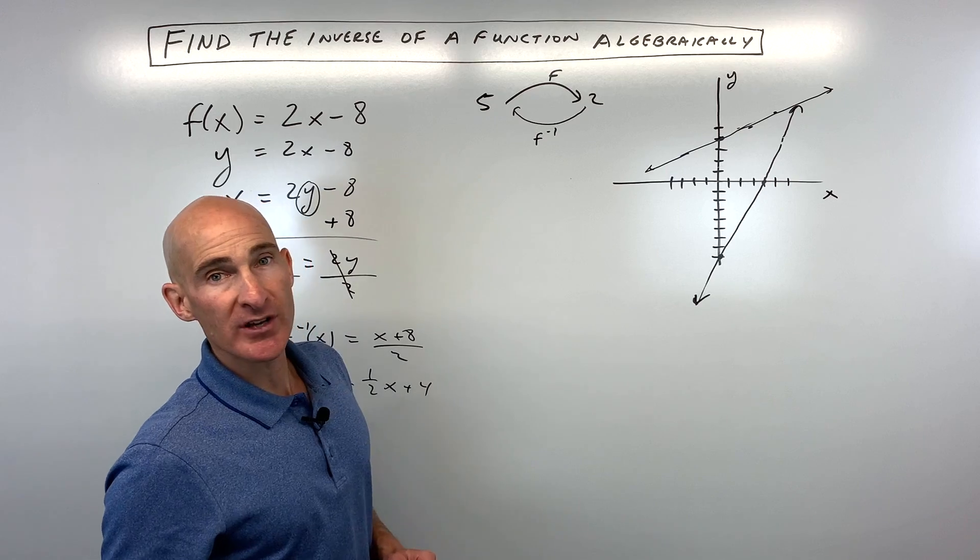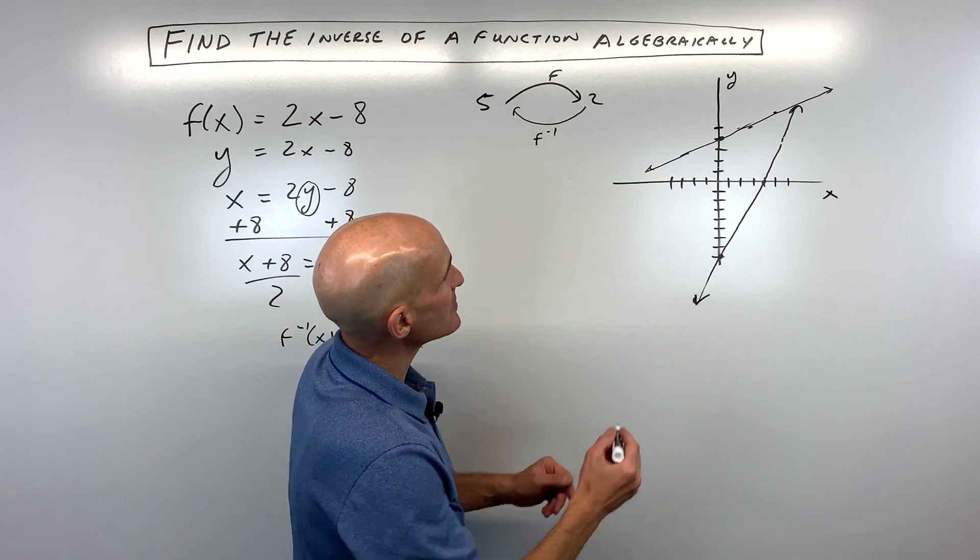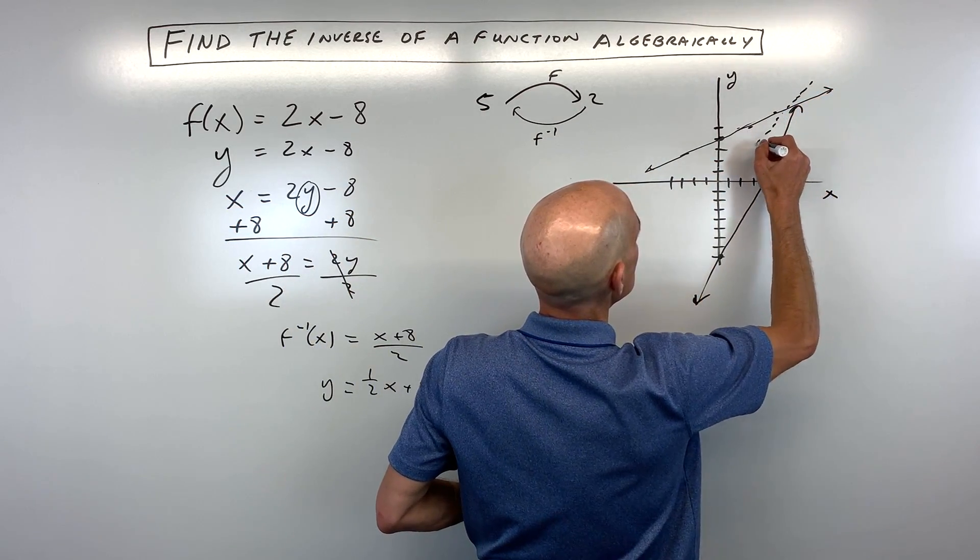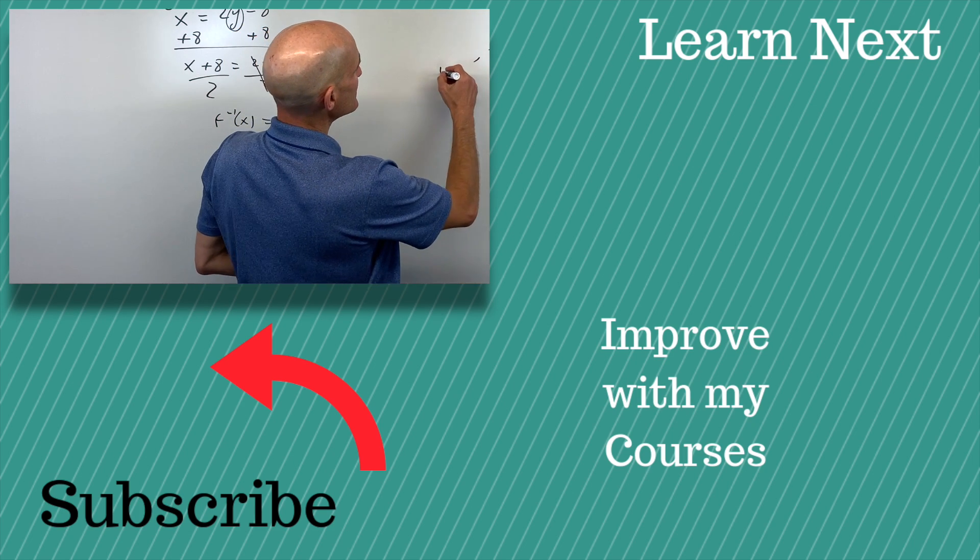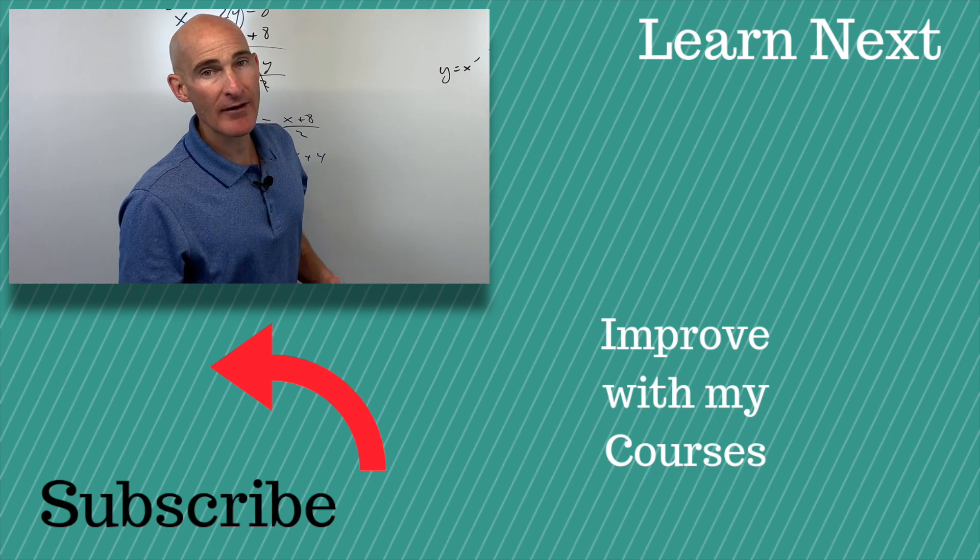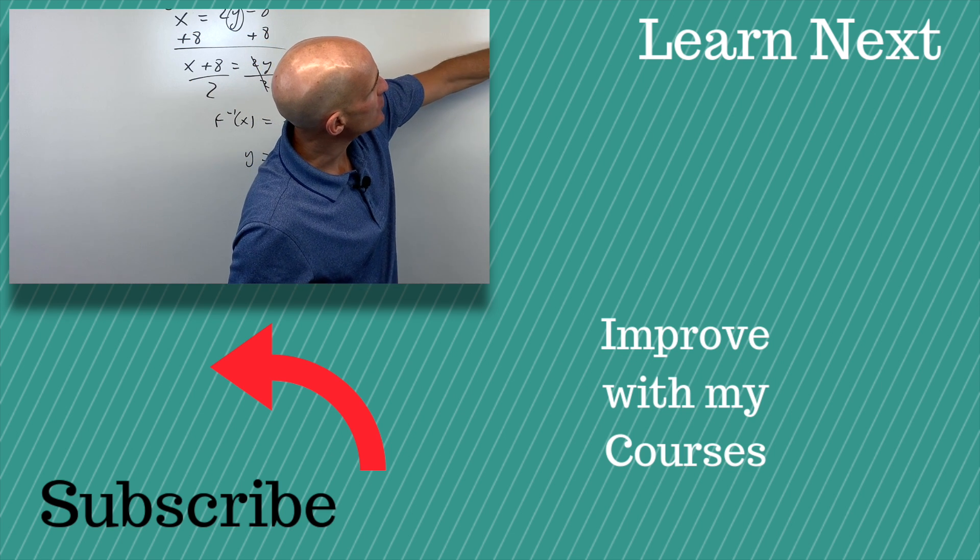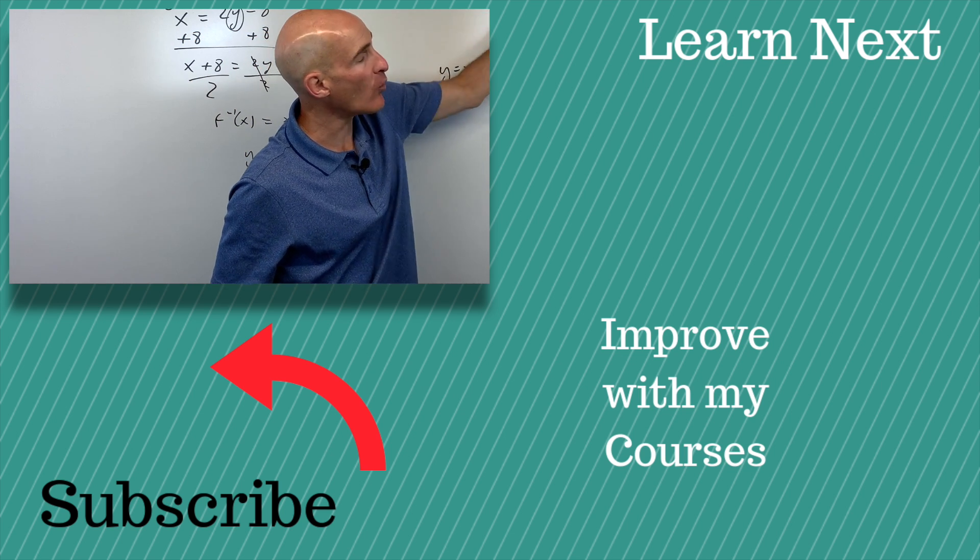And what you'll notice is that these two graphs are going to be reflections over this 45 degree line. This is the line y equals x. So graphically, the inverse of a function is a reflection over this line y equals x.